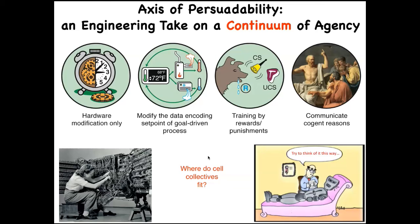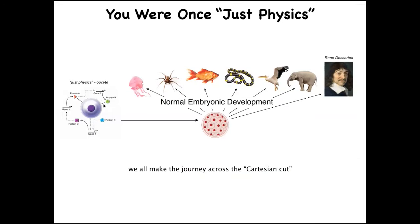We can't just have philosophical feelings about where things land on the spectrum — we have to do experiments. Most people say cellular collectives are at the bottom: 'it's a chemical machine, it doesn't have a brain.' But we all started life as a single cell — a blob of chemistry and physics that becomes something like this. Developmental biology shows there is no sharp dividing line that turns physics and chemistry into mind.